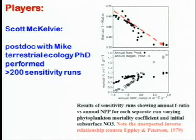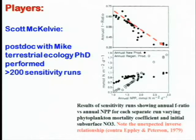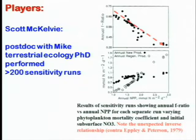Scott McKilvey was the third author on this paper and he's kind of dropped out of sight. I asked Mike's wife — she didn't know what happened to him, and we Googled and couldn't find him. Scott was a postdoc with Mike Fasham at Southampton, coming out of terrestrial ecology where he'd been making numerical simulation models of leaf area index and light-photosynthesis reactions in forests. His contribution to this model was that he conducted all the sensitivity runs, one at a time on an old slow PC, varying parameters and integrating the results.